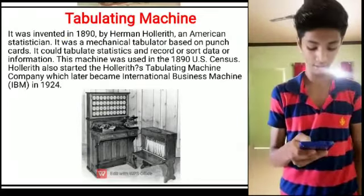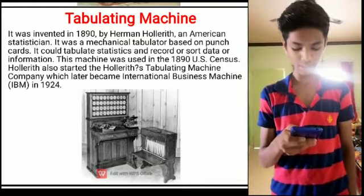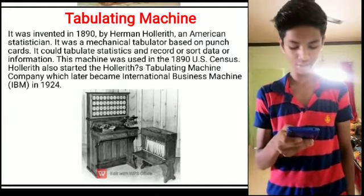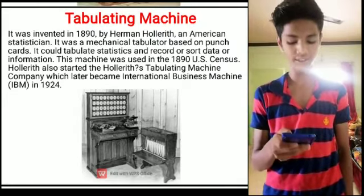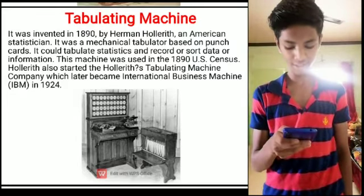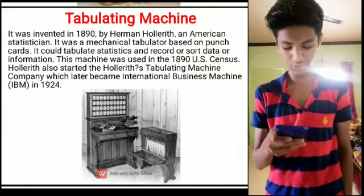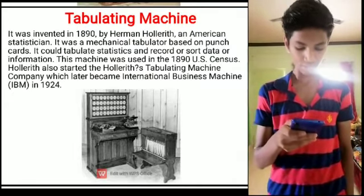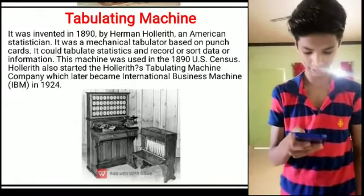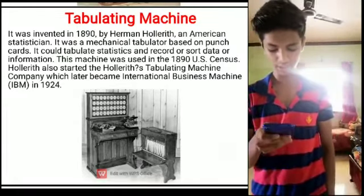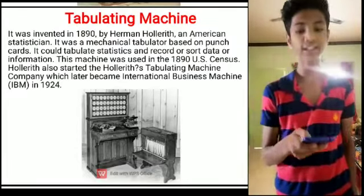7. Tabulating Machine: It was invented in 1890 by Hermann Hollerith, an American statistician. It was a mechanical tabulator based on punch cards. It could tabulate statistics and record or sort data and information. This machine was used in the 1890 US Census. It also started the Hollerith Tabulating Machine company, which later became IBM in 1924.